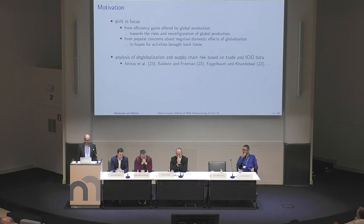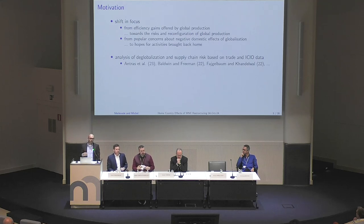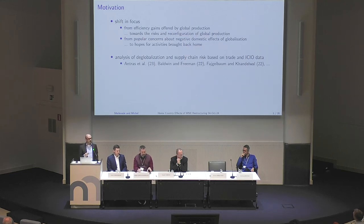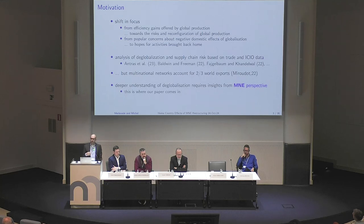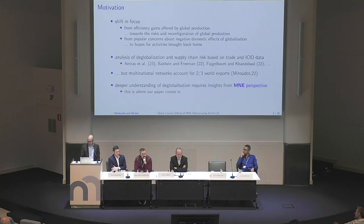We're obviously not the first to look into deglobalization and supply chain risk. There are many papers recently that look into this, but most of them use trade data or international inter-country input-output tables. This is where our paper comes in: we know that international trade is for maybe two-thirds accounted for by multinational networks, so we use micro data on multinational networks to gain insights into this deglobalization period.